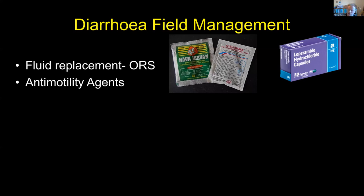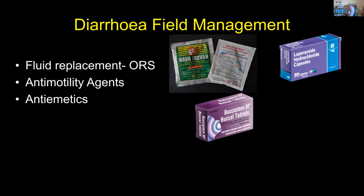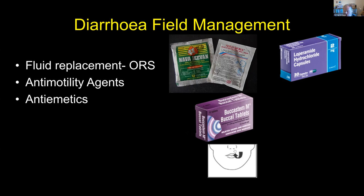Anti-motility agents such as loperamide are probably the most efficacious, well tolerated and rapid acting — usually within one to two hours. The dosing is two capsules (four milligrams) with the first diarrhea, then one further capsule (two milligrams) with every episode of diarrhea, up to a total of eight capsules — 16 milligrams per day. Bear in mind it takes one to two hours to work, so don't take multiple doses in quick succession. It doesn't cross the blood-brain barrier. For antiemetics, buccastem — a buccal version of prochlorperazine — is useful as it dissolves under the top lip and can be retained even while vomiting.